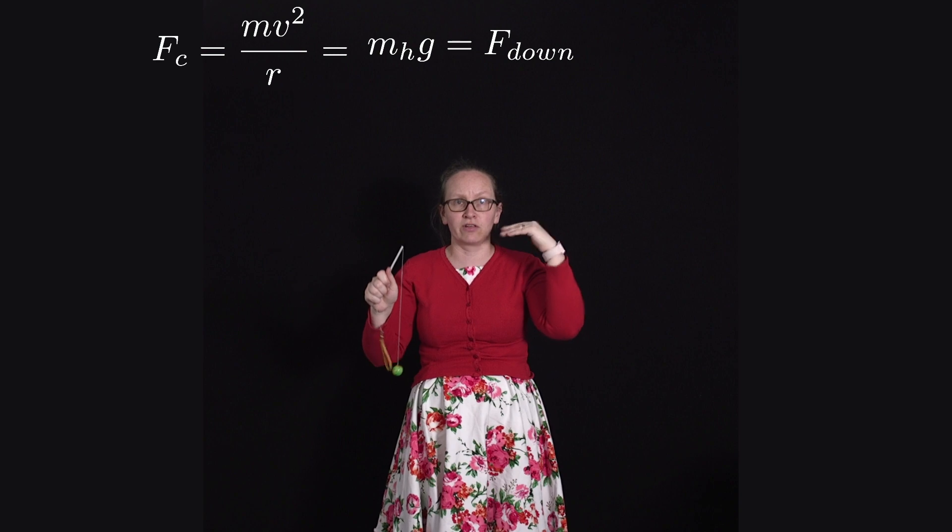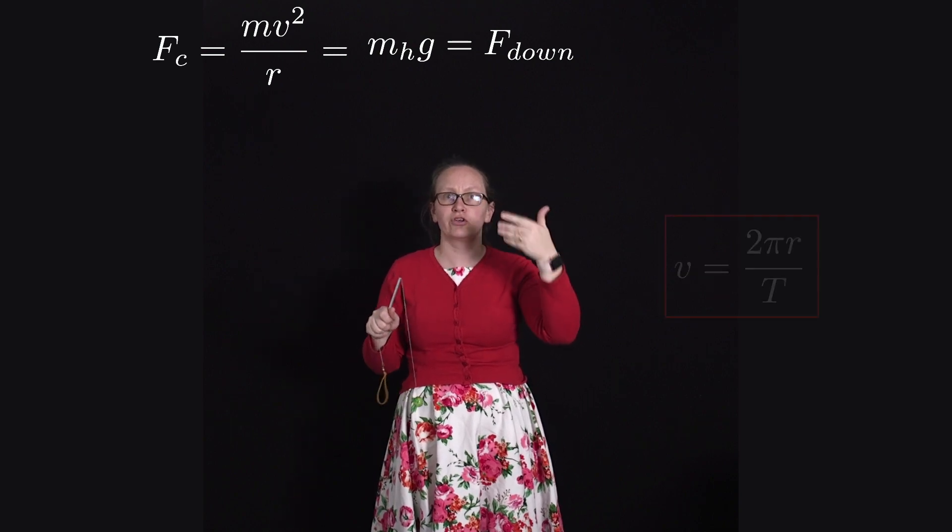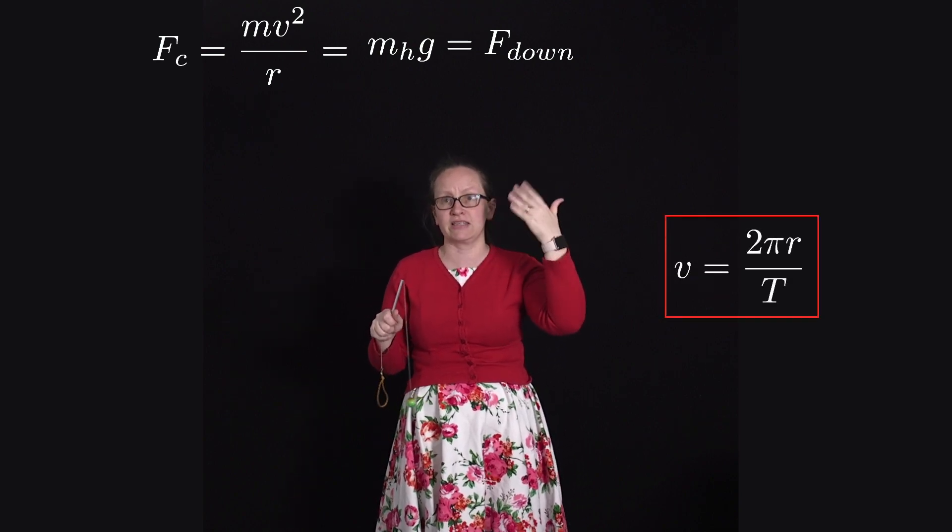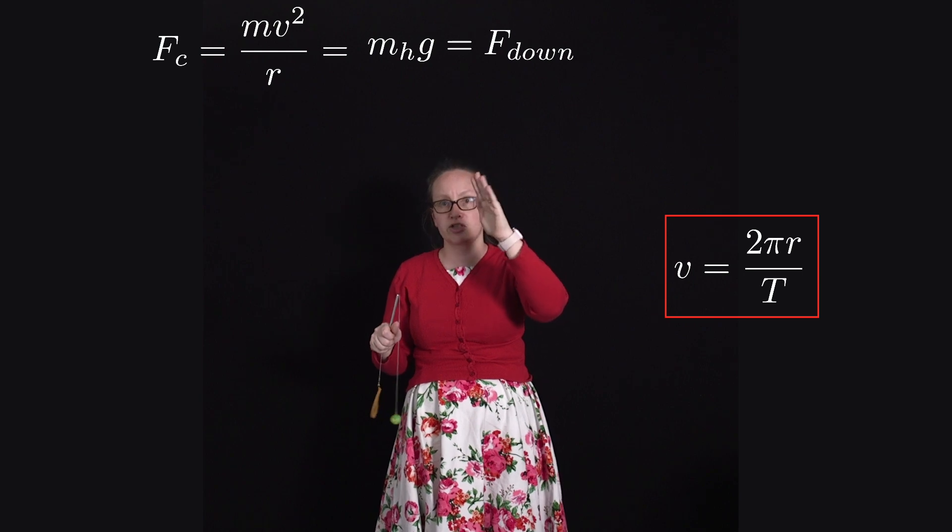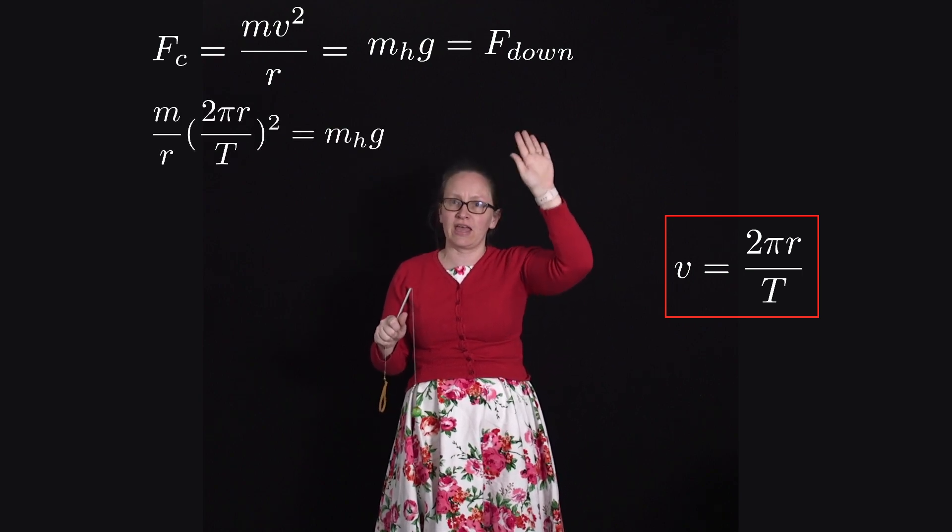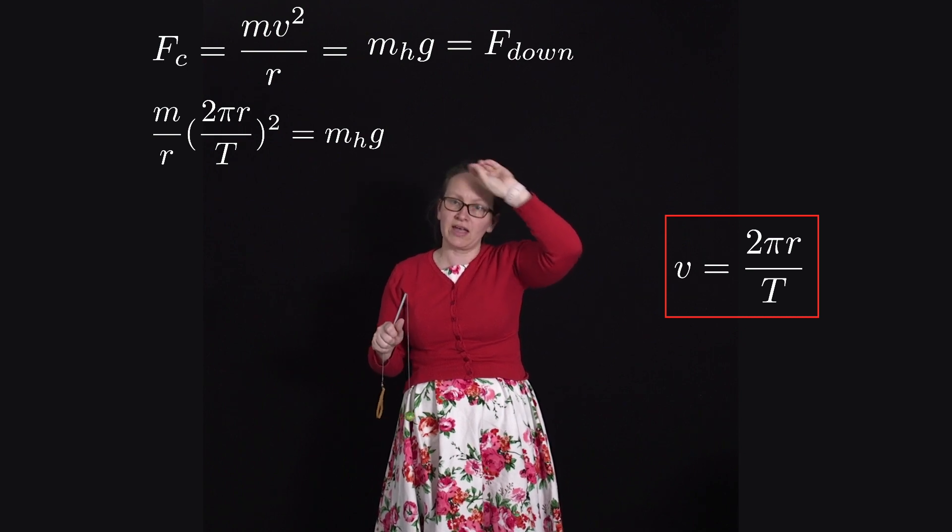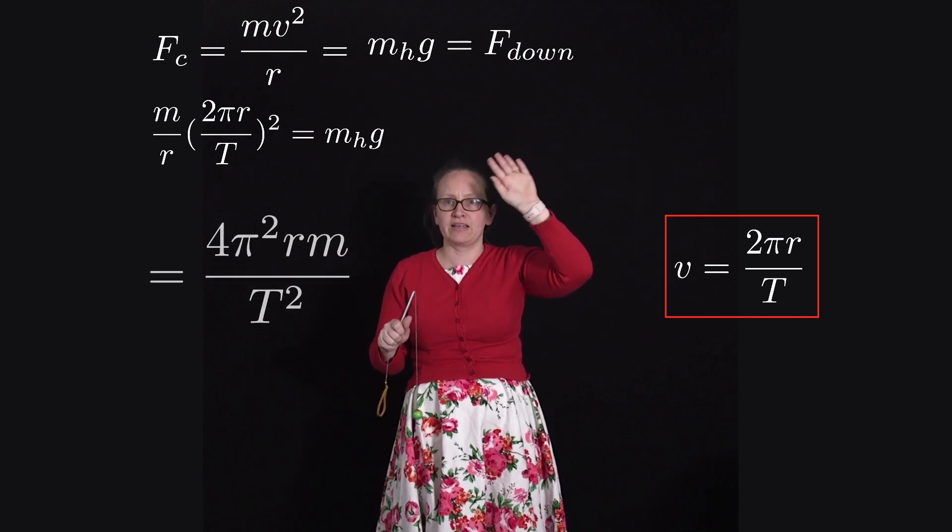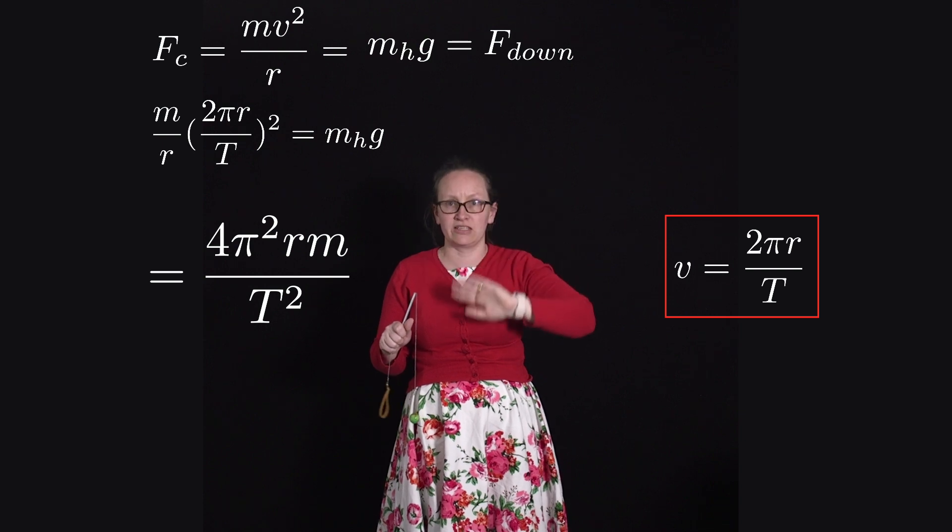Now we know that the velocity is given by 2πr on T, where T is the period, so we can substitute that in. So we have mhg is equal to m times 2πr on T squared, which is equal to 4π² rm on T².